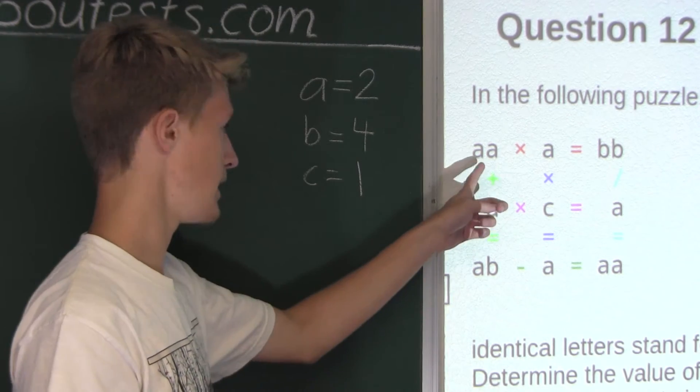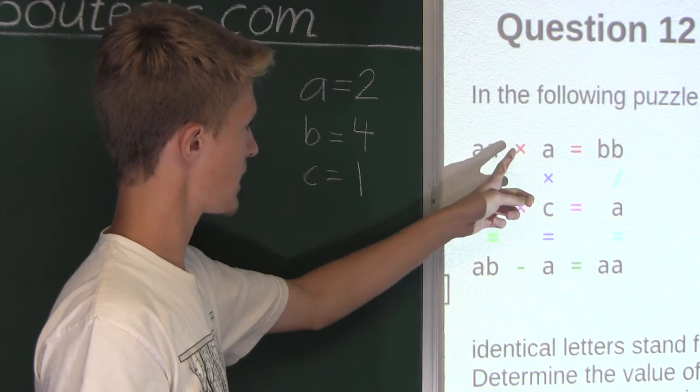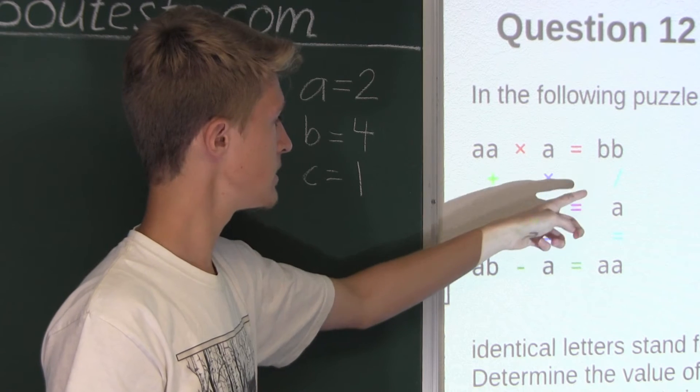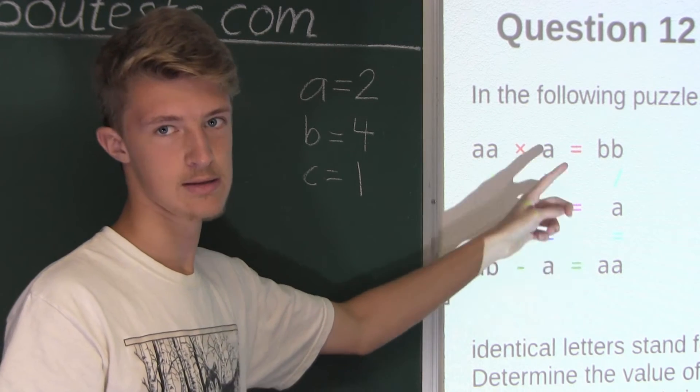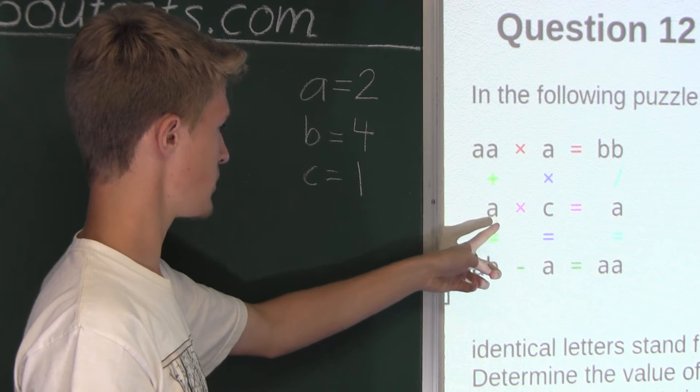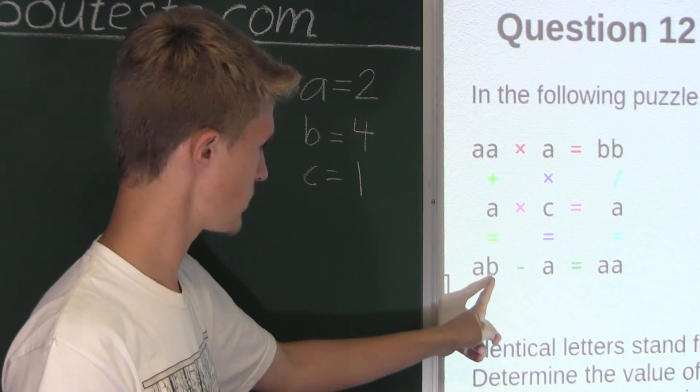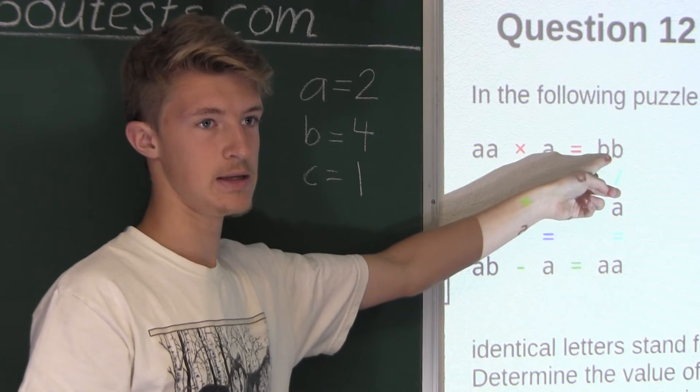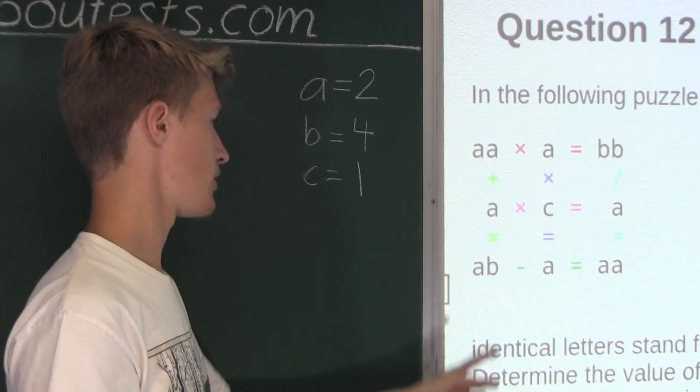And now let's just check for A equals to 3. So we have 33 times 3 is equal to 99. Then we have 99 divided by 3 is equal to 33, which is the same thing. Then here we have 33 plus 3 would be equal to 36, but that would mean that B would have to equal to 6. But we found out earlier that B would be 9 if A would be 3. So therefore, that doesn't work.